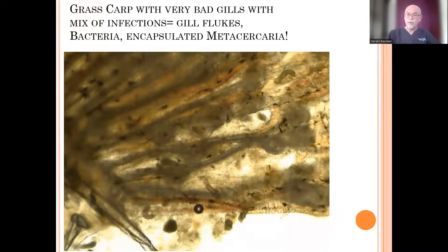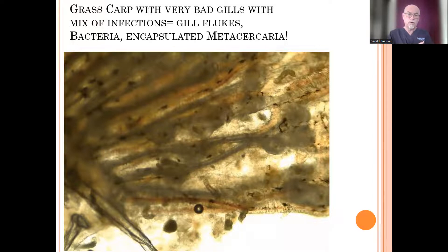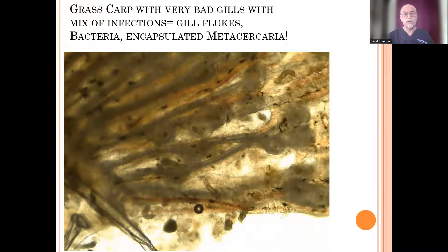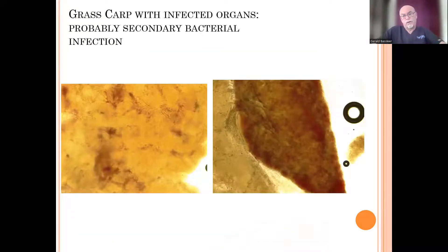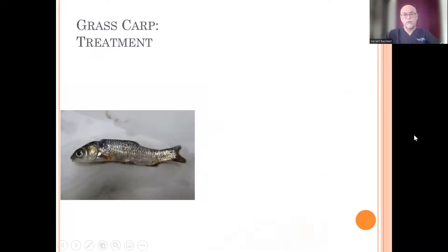The fish was already weakened because of those encapsulated metacercariae. If you know something about the cycle of those metacercariae, they usually come from a combination of birds and snails in an outdoor pond. This is poor management by the farmer — birds flying around and snails in the water, and then the fish is an intermediate host where the larvae are waiting to be eaten by a larger fish or a bird, and then the cycle continues. The gills are badly damaged, there are gill flukes, secondary bacterial infections in the gills. And the organs — the liver here, and to the right is the spleen — already also invaded with bacteria. So the fish had a very bad case of many mixed infections.